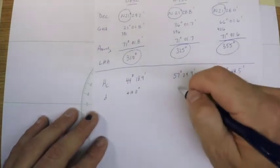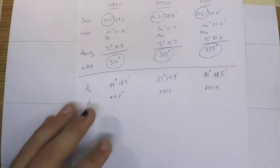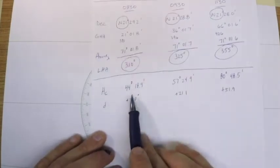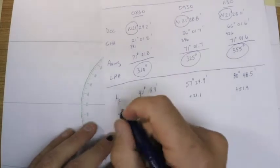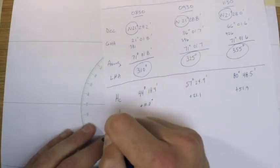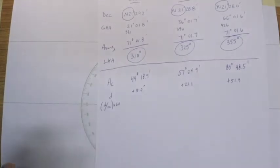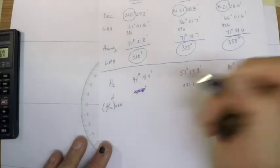So in order to apply this declination increment to my height computed, the way that I'll do that is I'll do D divided by the increment times 60. The other way you could do this would be in HO 229 in the very front you can use the interpolation tables if you prefer to do it that way, but I like to just do the math in this case.